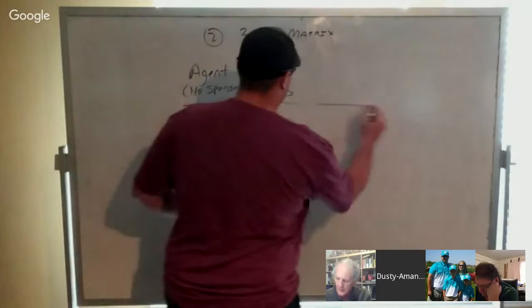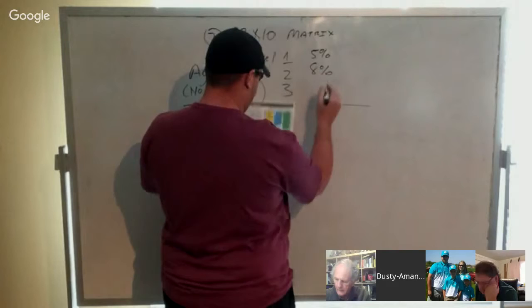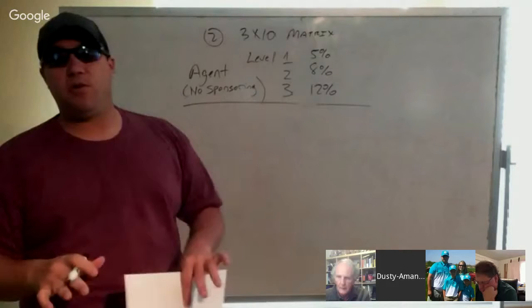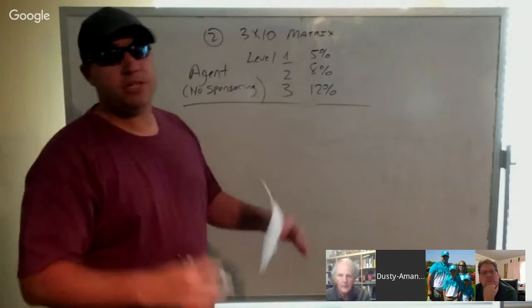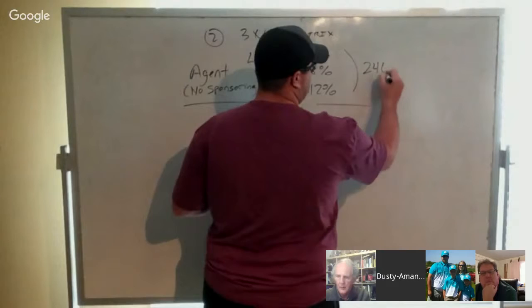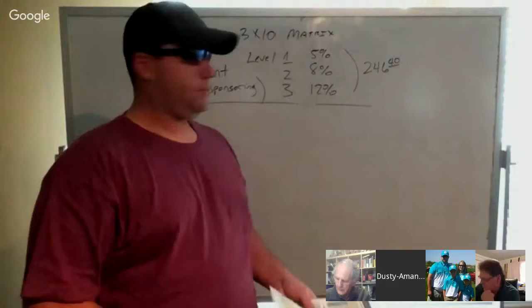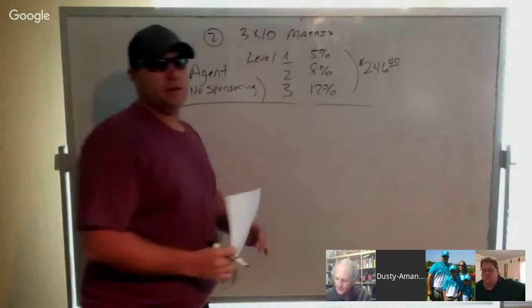Because there's no sponsoring required to earn any part of the first three levels of our matrix. And those pay out 5%, 8%, and 12%. So literally, if someone recruited no one and they were with a builder and their team group just by default was spillover, they can earn from these three levels $246.40 a month. $246.40 in a residual check with zero sponsoring requirements.